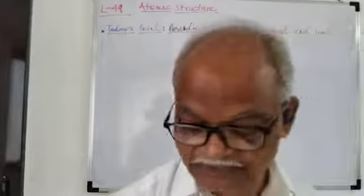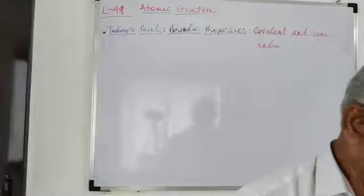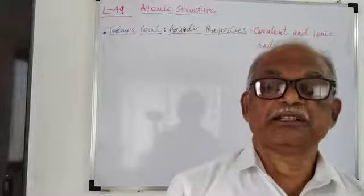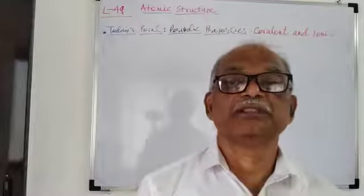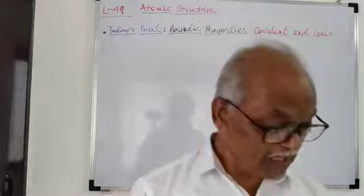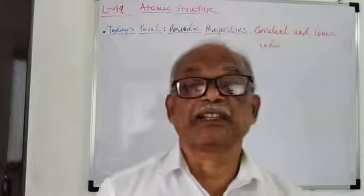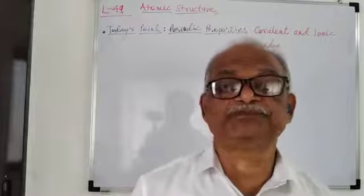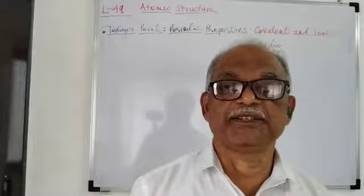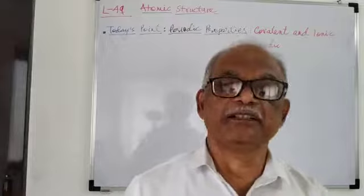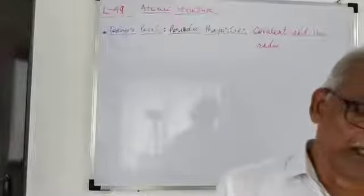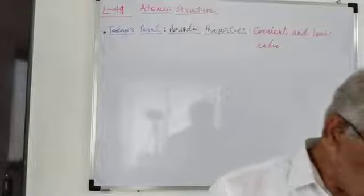First of all, we should understand that the atomic and ionic sizes of the element determine or govern various other properties such as ionization energy and electron affinity. Because of this, it is very important. The atomic and ionic sizes depend upon the distance between the nucleus and the outermost electron present in the atom or ion.